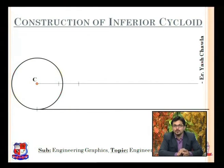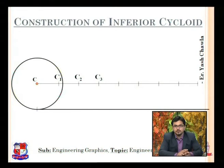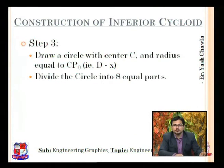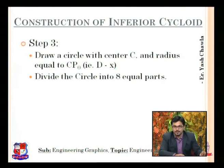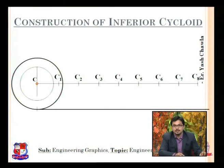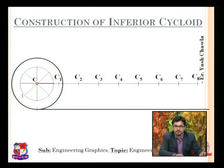We divide the lines into eight parts to get the different centers C1, C2, C3, etc. — C1, C2, C3, C4 appear on screen. Next, draw a circle with center C and radius equal to D minus X, where D is the radius of the circle. D minus X will be the radius of this inner circle. Then divide the circle into eight, twelve, or sixteen equal parts depending on your judgment. As you can see, the inner circle is formed inside the generating circle, giving us eight points.